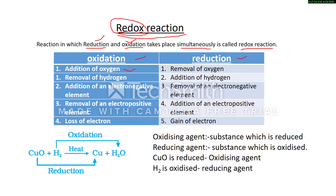Addition of oxygen to any substance is called oxidation, and opposite to this, removal of oxygen is called reduction. We can also say addition of hydrogen is called reduction, and opposite to it, removal of hydrogen is called oxidation. Addition of an electronegative element is called oxidation, and removal of an electronegative element is called reduction.